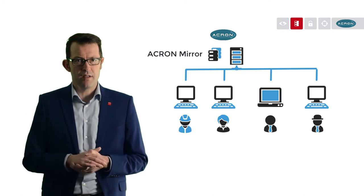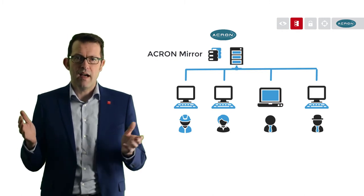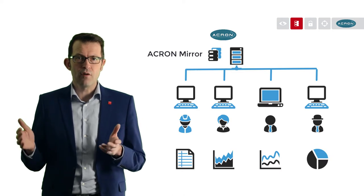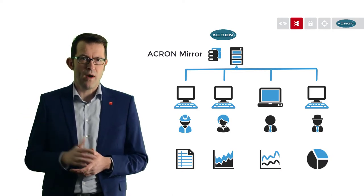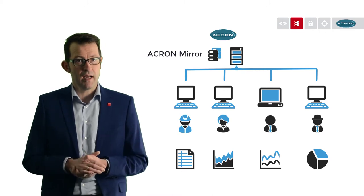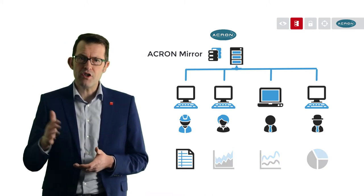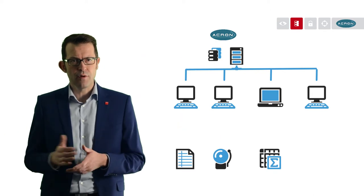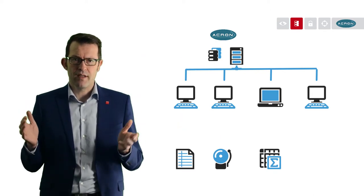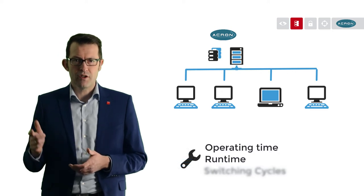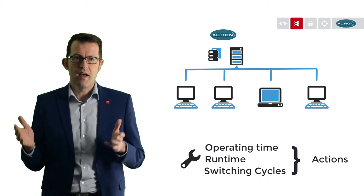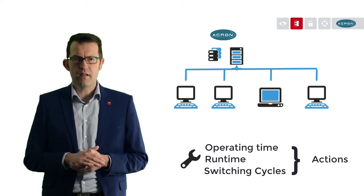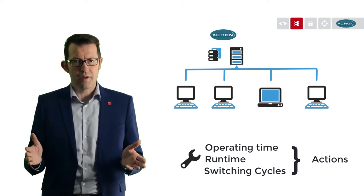With the scalable redundancy option, we take maximum availability into account. For analytics, Akron provides a series of its own powerful evaluation tools, so you always have full control over your data and can make the right decisions based on well-calculated KPIs. With the additional alarm, maintenance, and service module, you receive a clear display of all alarms that have occurred in the entire system. With the associated maintenance module Akron Service, measures are defined based on operating and running times as well as switching cycles, made available to maintenance staff in a simple and clear manner so that downtime is avoided before it occurs.